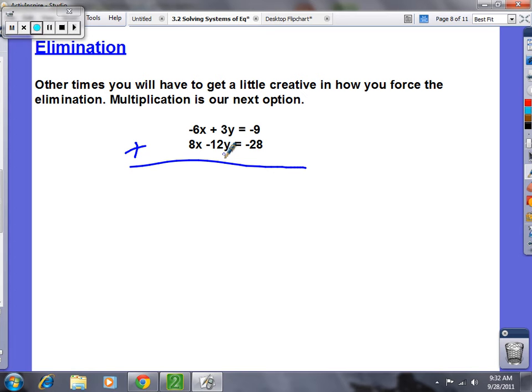What if this top y was a 12y and the bottom was -12y? Then they would cancel. How can I change a 3y into what I want? I want a 12y. If you times it by 4, you have to times each term by 4. So what's -6x times 4? -24x.